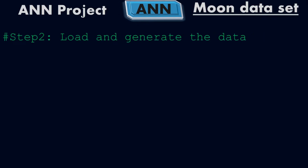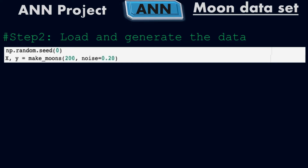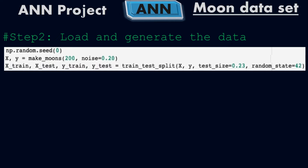Step two is to load and generate the data. We write: np.random.seed(0), then x, y = make_moons(200, noise=0.20). We use NumPy's random seed for reproducibility, and make_moons generates 200 data points with a noise level of 0.20.